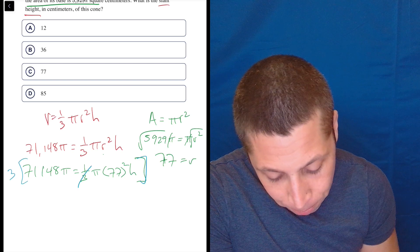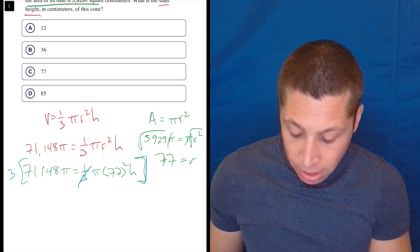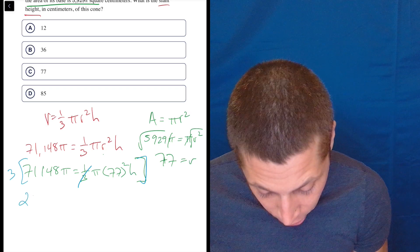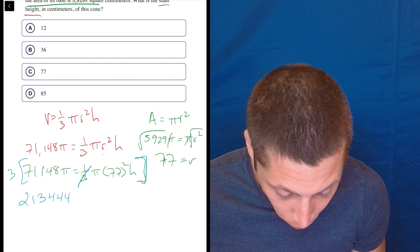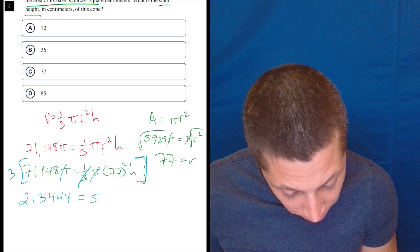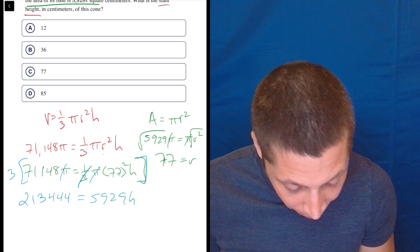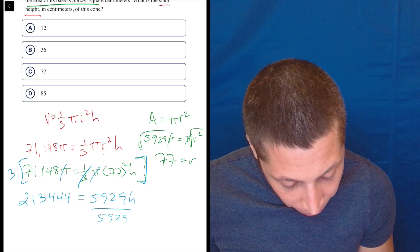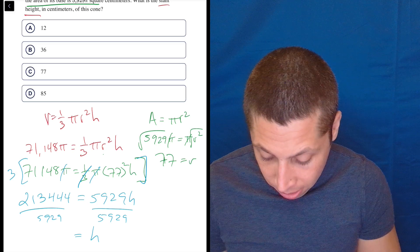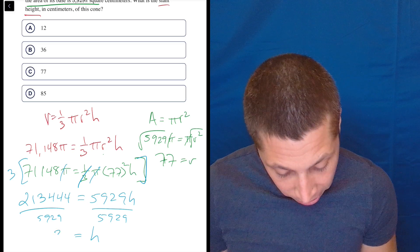So we multiply by three. That's going to cancel this out. We've got to do 71,148 times 3 is 213,444. Let's get rid of those pis while we're at it. We did 77 squared before. That's 5,929. And now we can divide by 5,929. And we get h is 36.